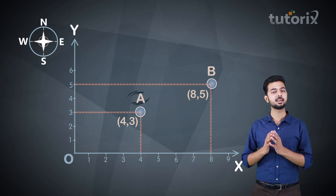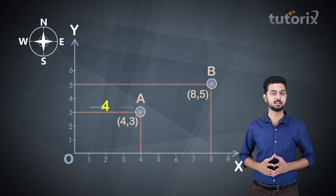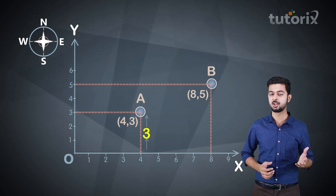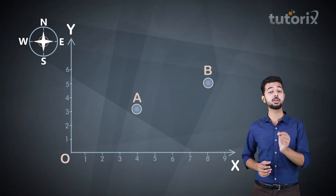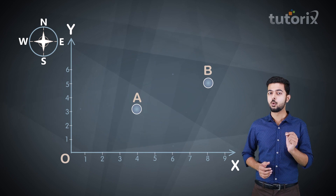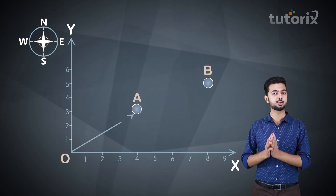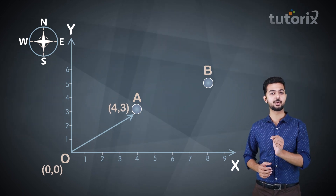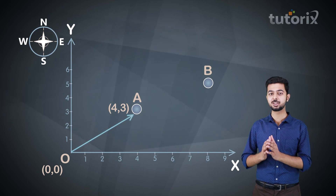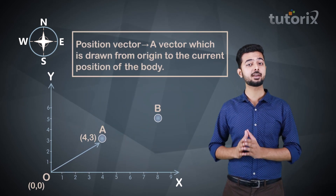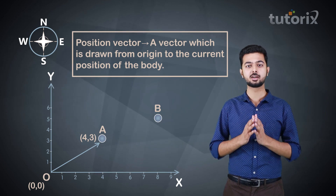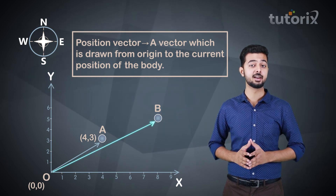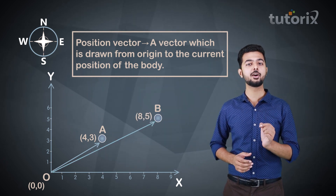Car A travelled 4 km in the east direction along the x-axis and 3 km in the north direction along the y-axis. In order to represent the current position of car A, we can draw a vector from the origin to the current position of car A — that is from (0, 0) to (4, 3) — and this vector is called the position vector of car A. A position vector is a vector drawn from the origin to the current position of the body. Similarly, we can draw a position vector for car B, from the origin to (8, 5).